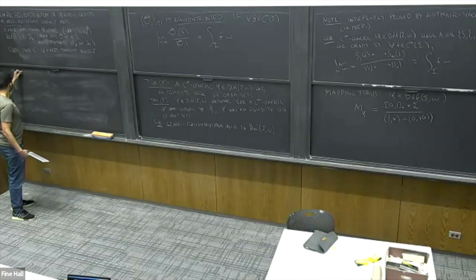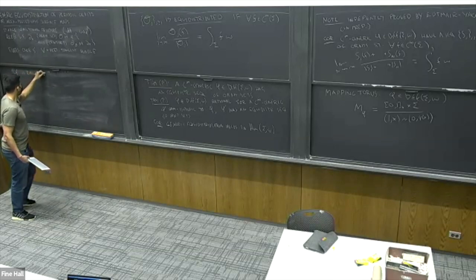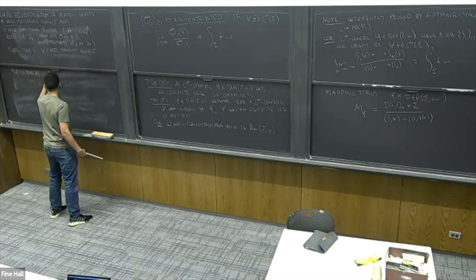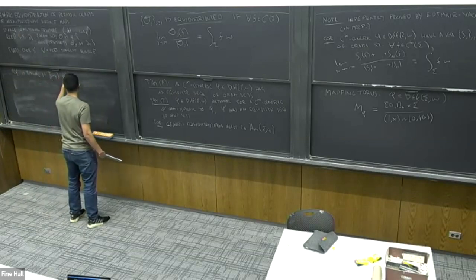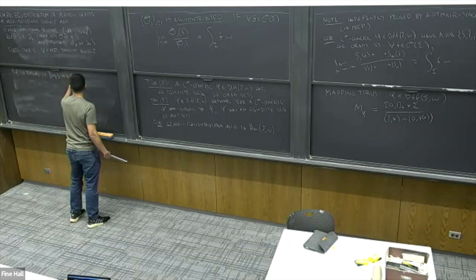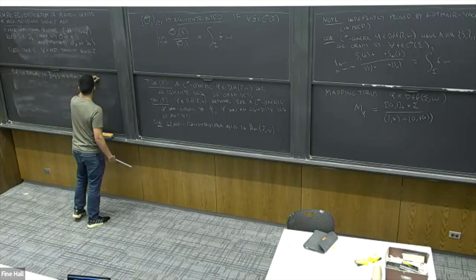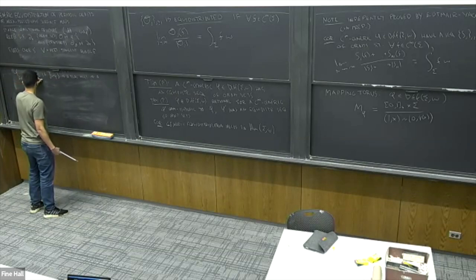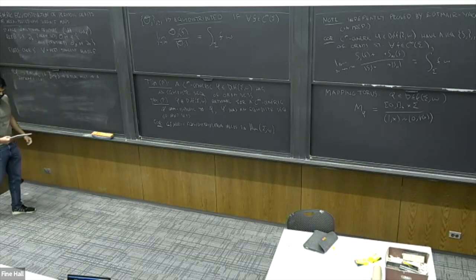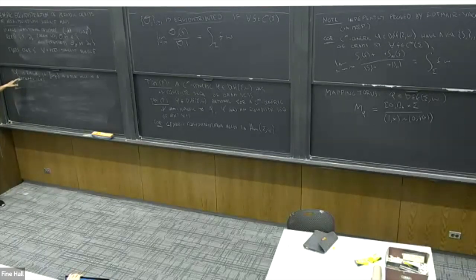phi is rational if the two-form omega_phi, or rather its cohomology class, is a real multiple of a rational class. That's just tying up that loose end.